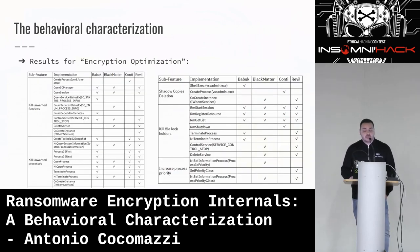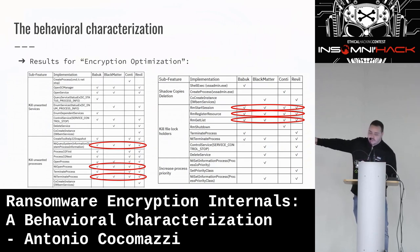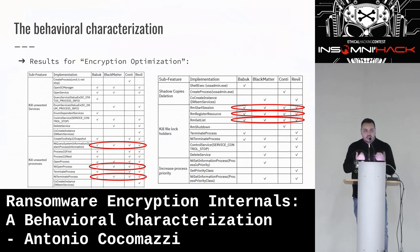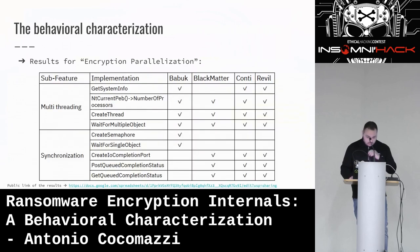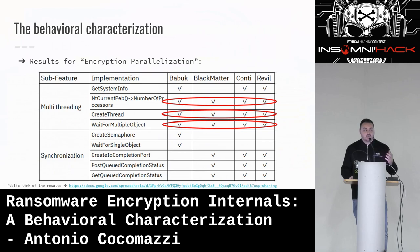For encryption optimization, of particular interest is Restart Manager API usage — it's used by every ransomware. A ransomware can cause a lot of damage without using Restart Manager API, but since ransomware developers try to build their software as well as they can, this can be used by defenders to create detections. For encryption parallelization, there are some commonalities in multi-threading implementation, but I do not recommend using it for detection because it's hard to discern between benign and malicious usage.